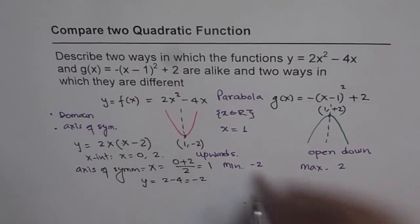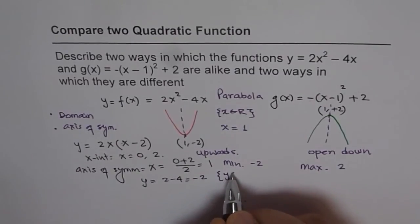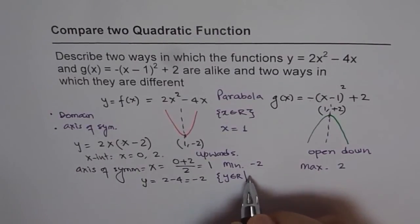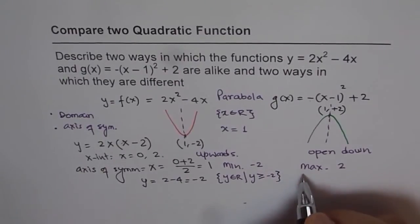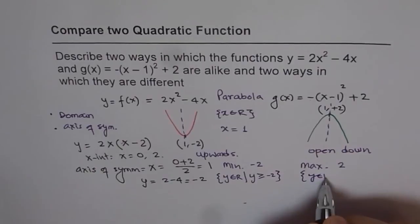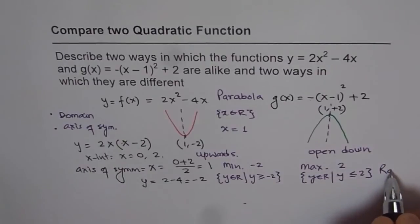So that could be another difference. Then we can say range. So if we write range, then range is y belongs to real numbers such that y is greater than or equal to minus 2 for the first case. And in the second case, y belongs to real numbers such that y is less than or equal to plus 2. So that is the difference in between their range.